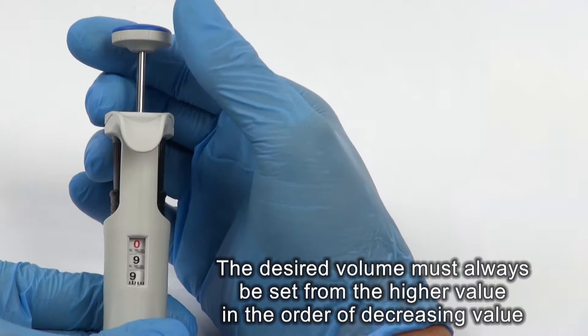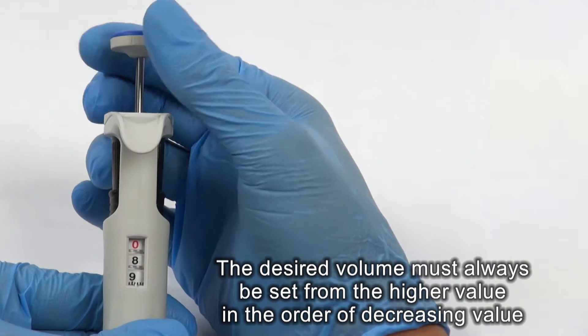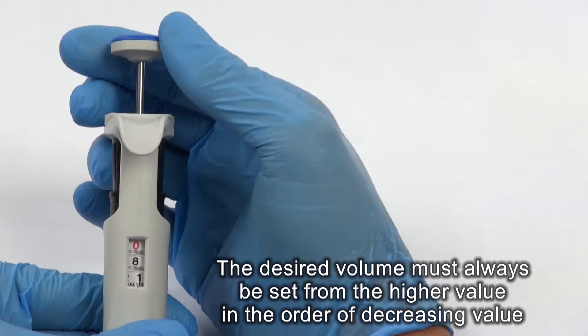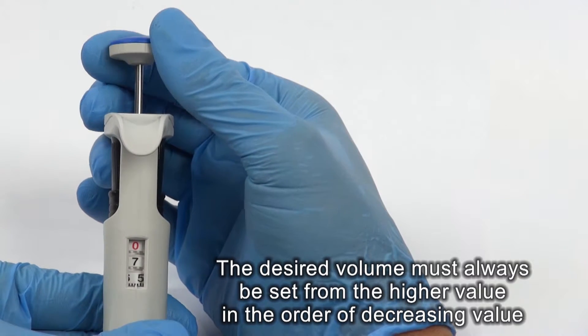If the desired volume is lower than the set volume shown by the counter, turn the counter in the direction diminishing counter readings to the required volume. Avoid passing this value.